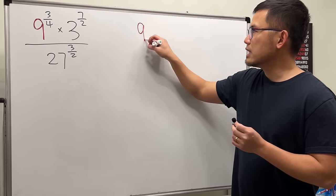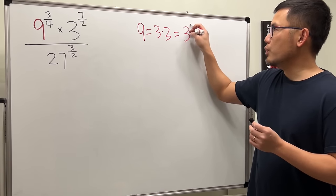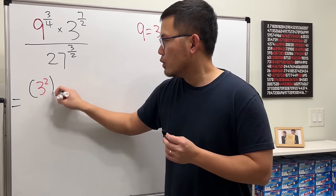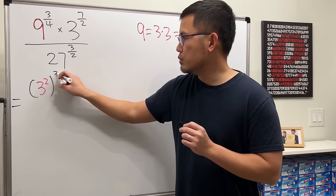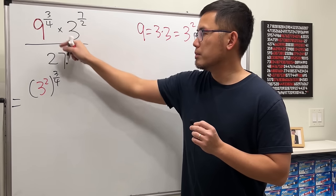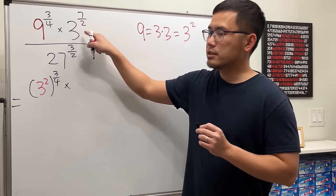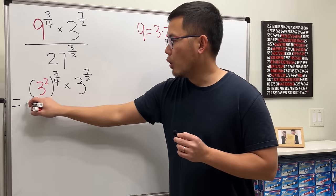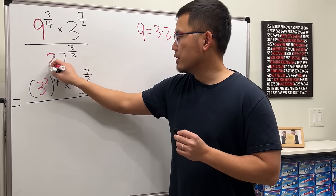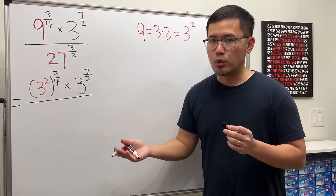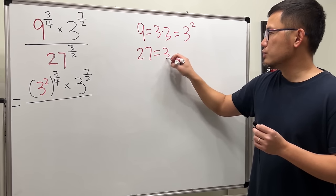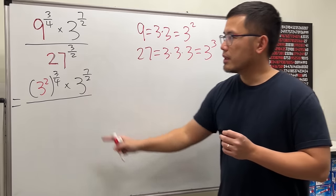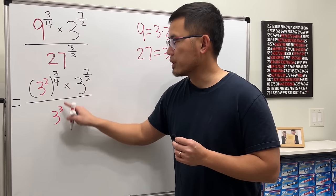For the 9, we know 9 is the same as 3 times 3, which is just 3 squared. So here we will have 3 squared raised to that power 3 over 4. The 3 in the middle is already good. For 27, we can write that as 3 times 3 times 3, which gives us 3 to the third power. So I'll put 3 to the third power for the 27.